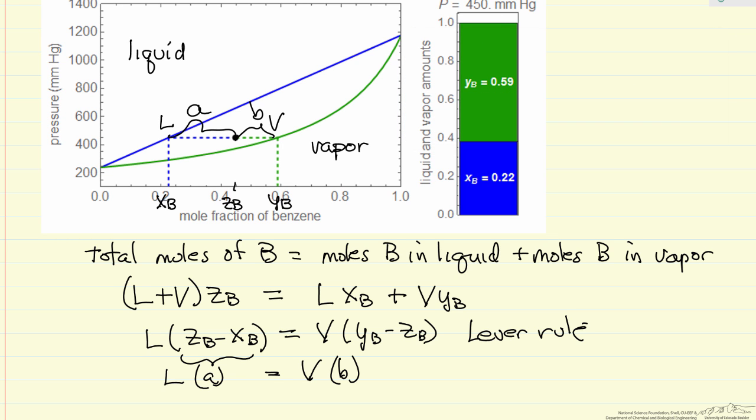So the lever rule just follows from a mass balance, and we use it often when we're trying to determine amounts in phases. It does not just have to be liquid and vapor that are in equilibrium, but it only applies when we have two phases in equilibrium.